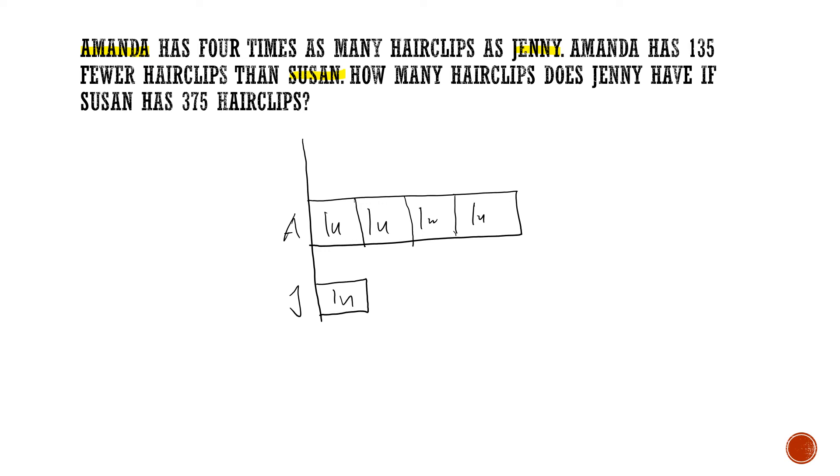Amanda has, now there's another person called Susan now. Amanda has 135 fewer hair clips than Susan. So now Susan has a bar over here, which is more than Amanda. This is Susan. Susan has 135 more than Amanda. And you also have to separate the remaining bar into 4 equal parts. And you have to label. If you don't label, you'll be very confused. If not, the 135 will look like the other bar. So you have to actually label 1U for all the units that are the same. And you've got to put the extra 135. So now over here, the last part. How many hair clips does Jenny have? So this is the unknown. If Susan has 375.